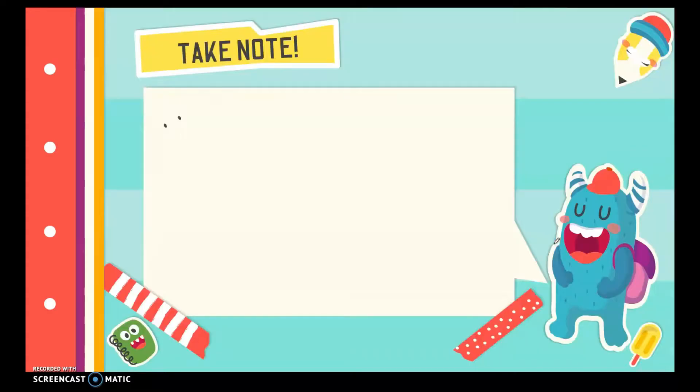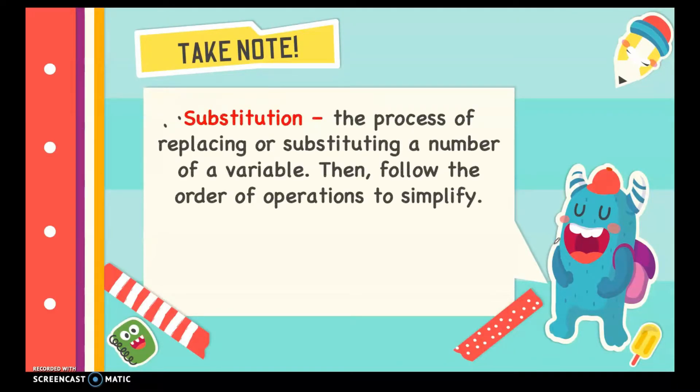What is substitution? Substitution is the process of replacing or substituting a number of a variable. Then, follow the order of operations to simplify. In order of operations, the rule, like the GEMDAS rule or the PEMDAS rule.